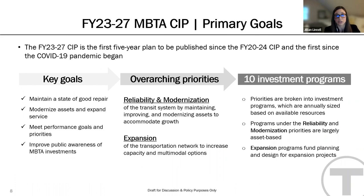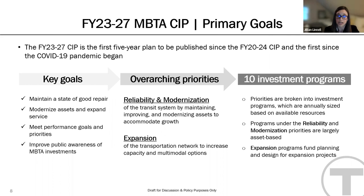Looking more closely at the fiscal year 23 to 27 capital investment plan, this year the MBTA has published a standalone MBTA-only CIP that is also the first five-year plan published since the fiscal year 20 to 24 CIP. In fiscal years 21 and 22, due to the ongoing COVID pandemic, the MBTA, along with our partners at MassDOT, published a one-year maintenance of effort CIP, which focused on continuing programs already underway and some key targeted investments for the future.